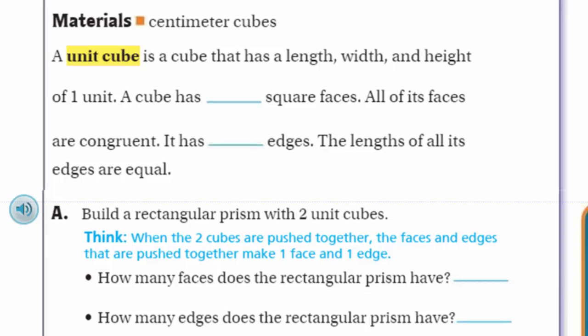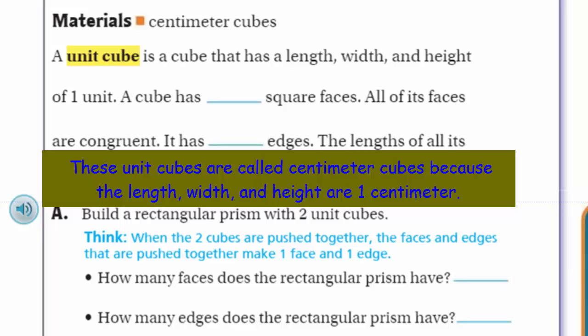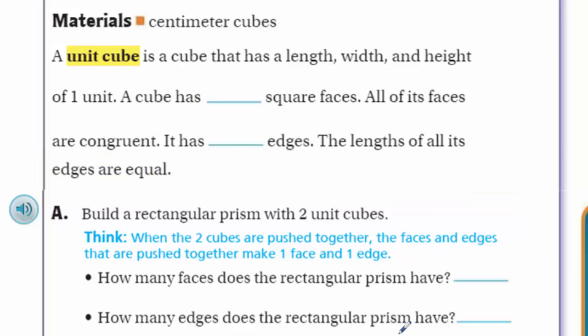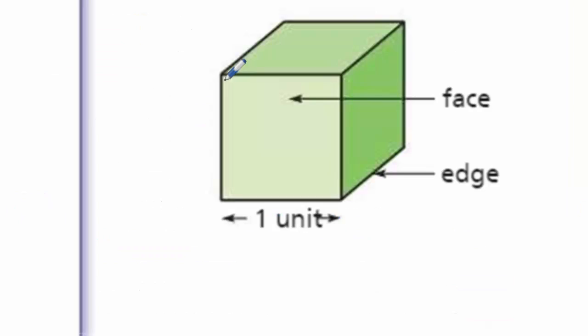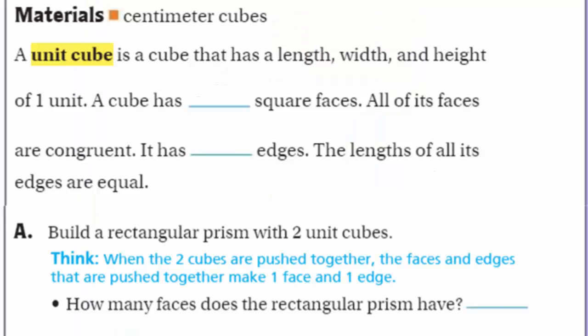A unit cube, as it's highlighted, is a cube that has a length, width, and height of one unit. One unit is just whatever that unit happens to be — it could be an inch, it could be a centimeter. A cube has blank square faces. You can pick up your own cube and count which ones are faces. A unit cube has six square faces.